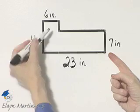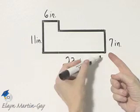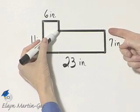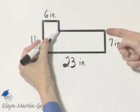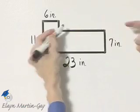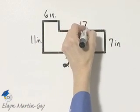I'm just looking at horizontal lengths right now, or measures. So that's 23, that's 6. I can use those two measurements to find this length. 23 minus 6 is 17, so this is 17 inches.